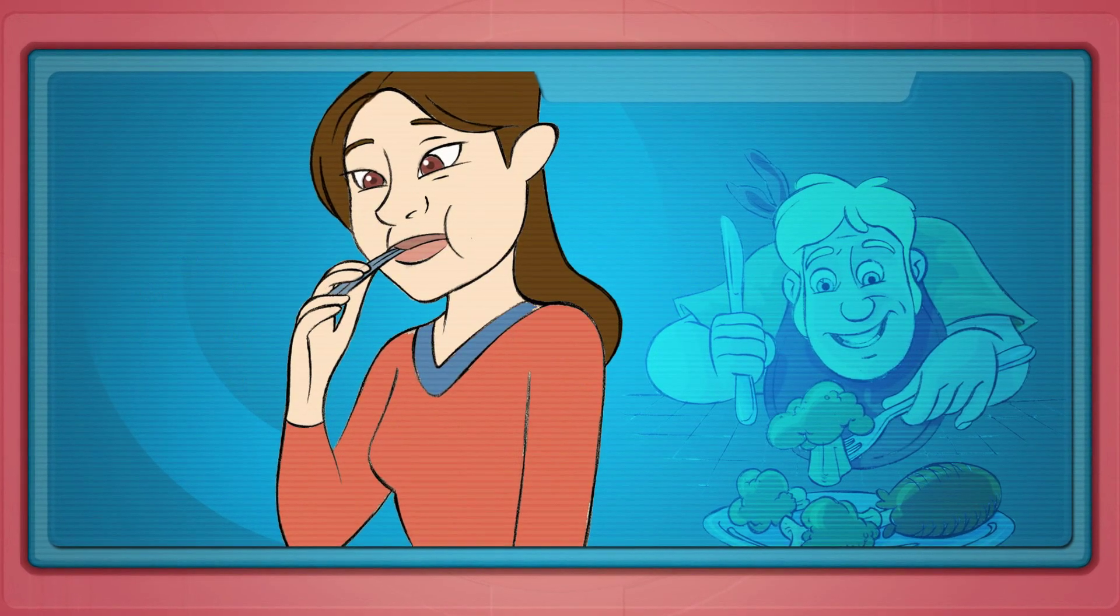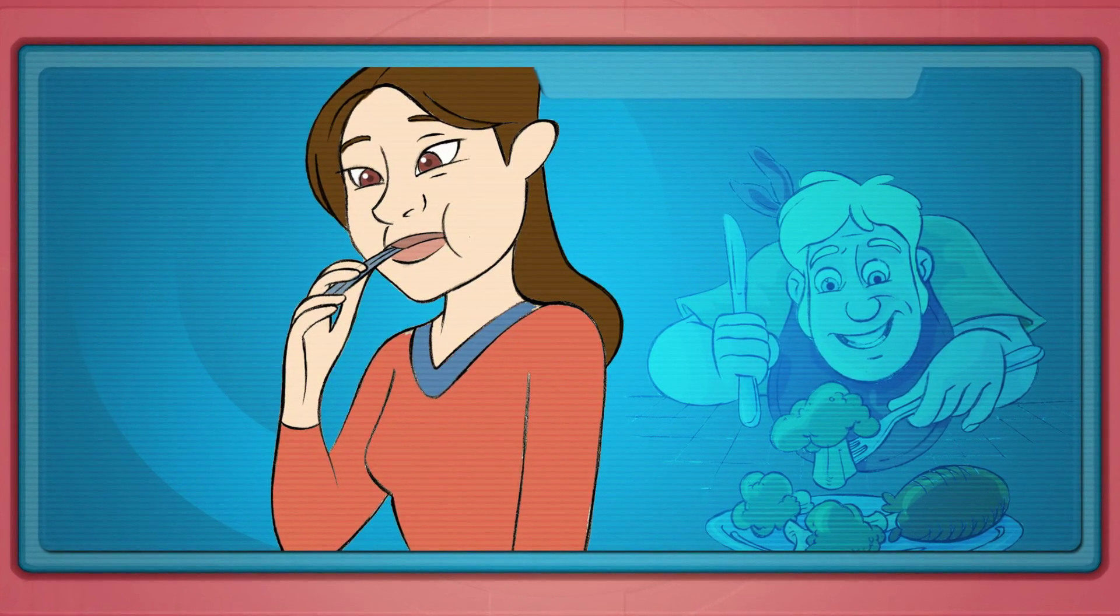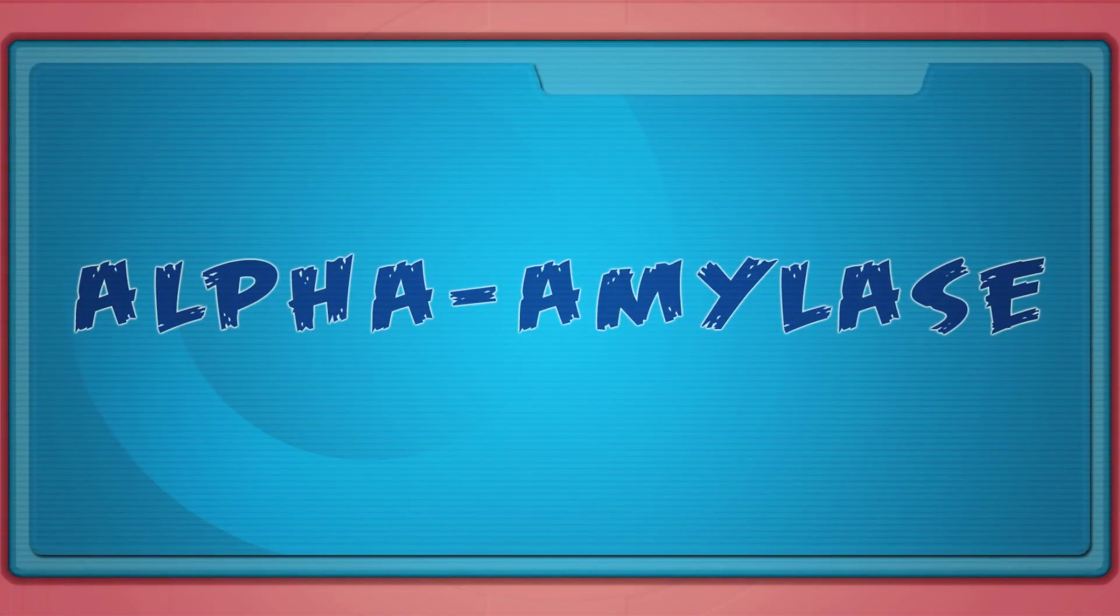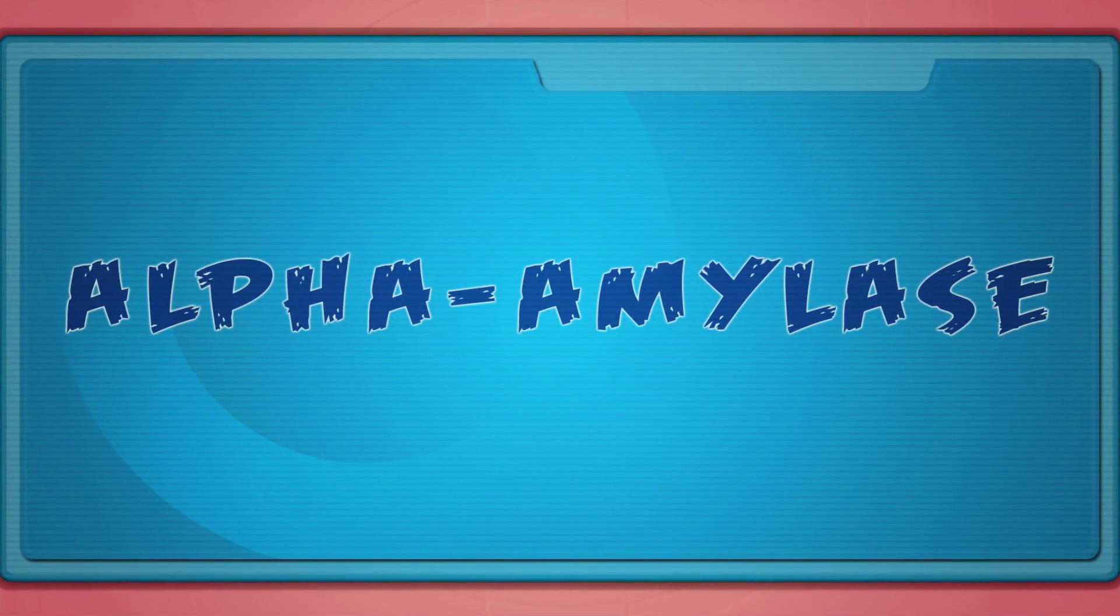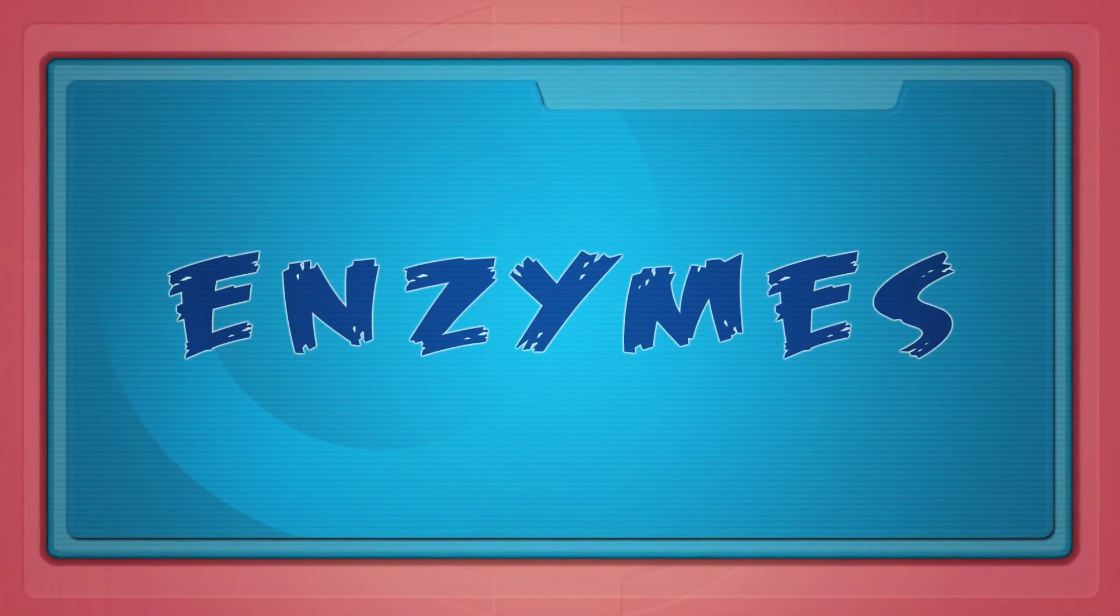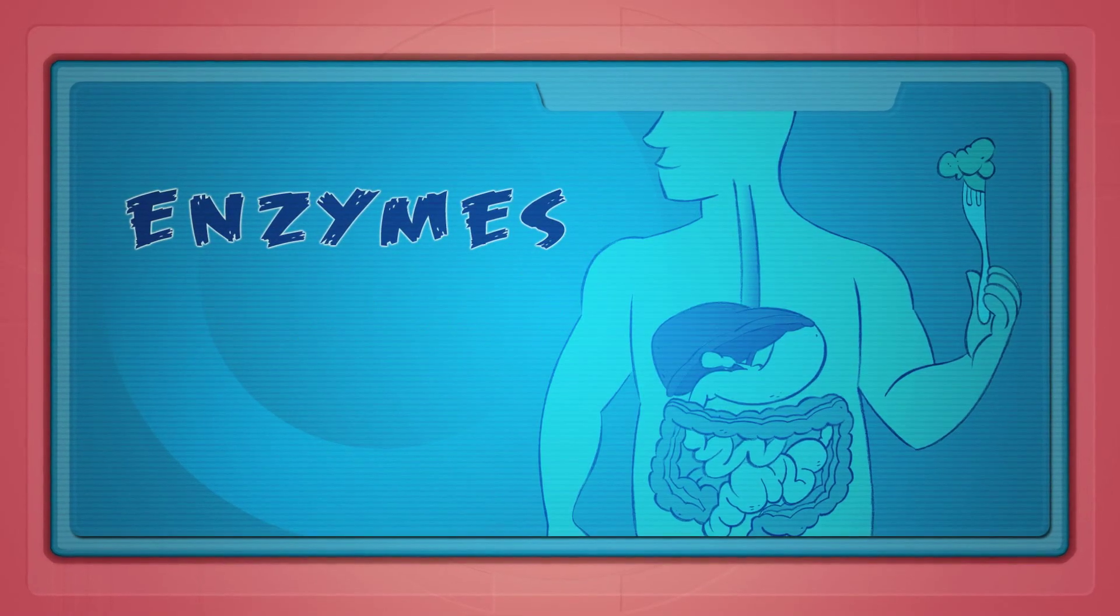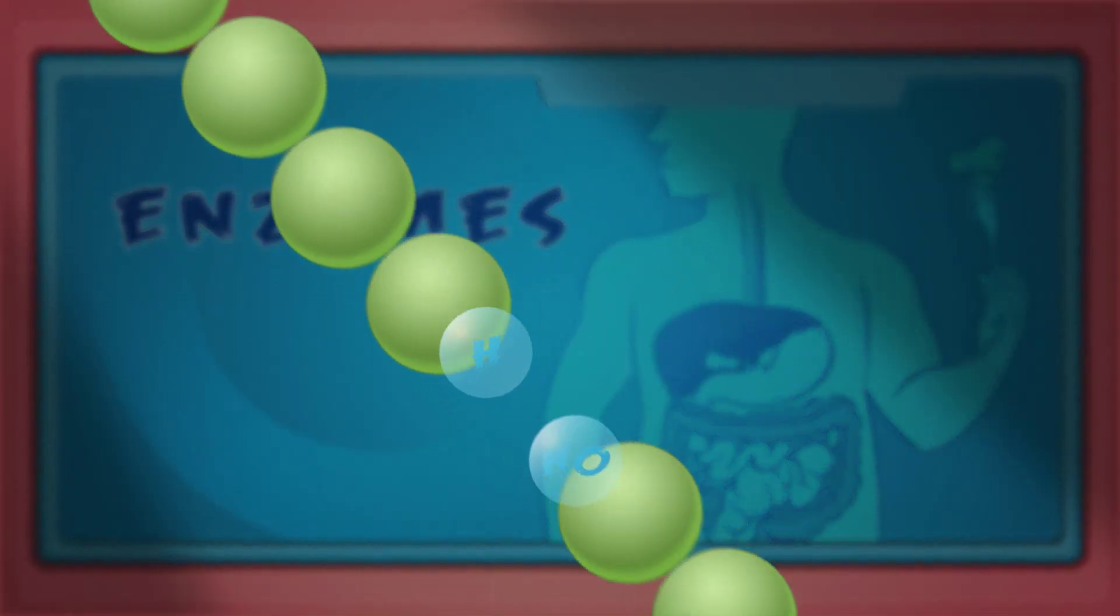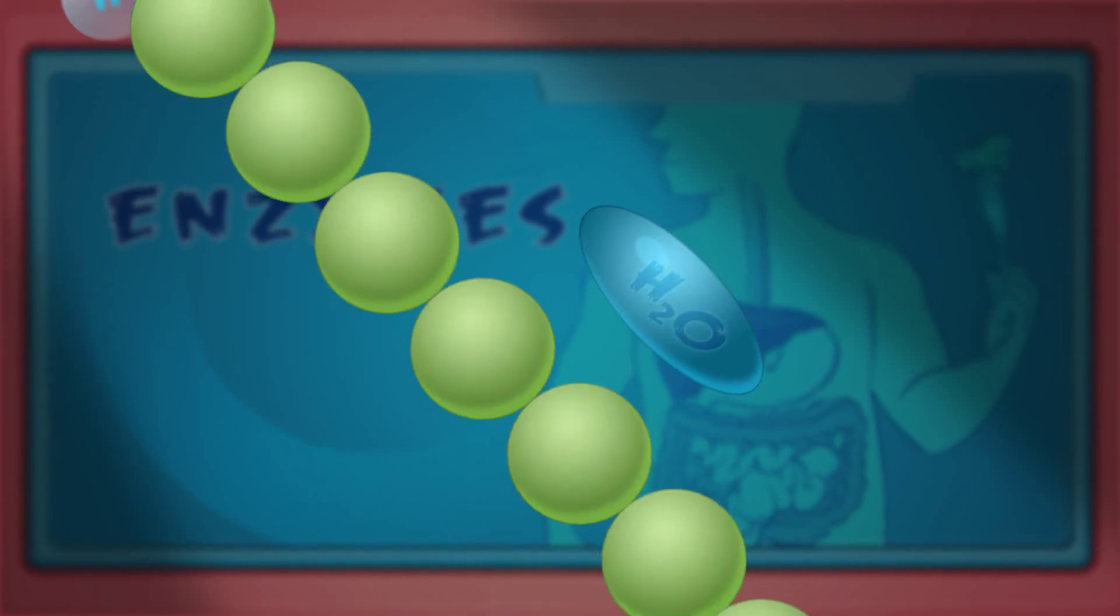Breakdown of starch starts moments after you take your first bite of food, thanks to an enzyme called alpha amylase found in your spit. Let's talk about enzymes for a second. Enzymes help speed up chemical reactions and play an important role in digestion. One of the reactions they speed up is hydrolysis.